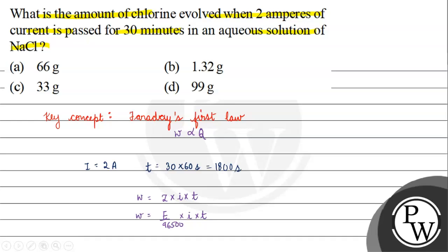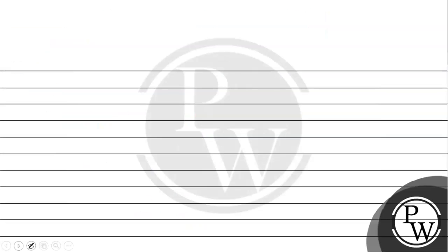Equivalent weight, what will we have? Now we have two chloride ions, two chloride ions that are called Cl2, and we give two electrons, right?